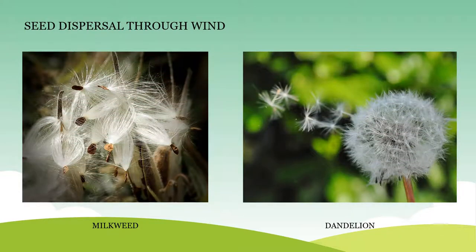You can see the images of milkweed and dandelion on your screen. Observe them carefully. They have hairy structures attached to the seeds. These hairy structures will help them to be carried away by wind to different places. They germinate wherever they come in contact with soil. So generally, the seeds which get dispersed through wind are light in weight and are attached to hairy structures. Now let us observe how the seeds get dispersed by wind in dandelion and milkweed plants.